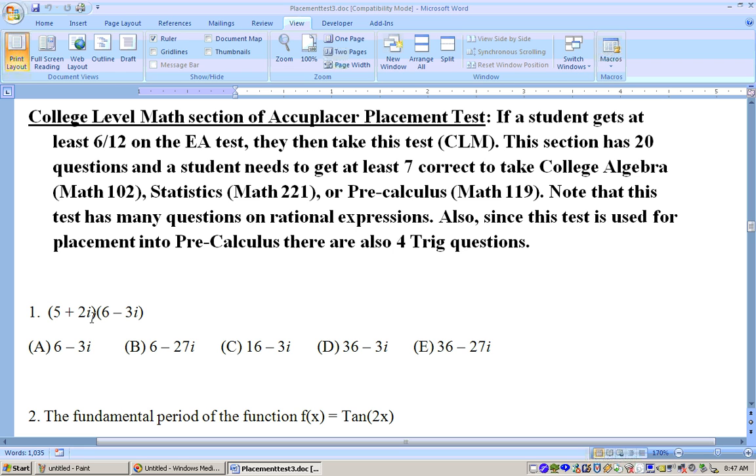Now, i is the square root of negative 1. It's not like a variable type of thing. So we're going to need to foil these together, and then we're going to have to realize something about i on this problem. So let's go ahead and do that.